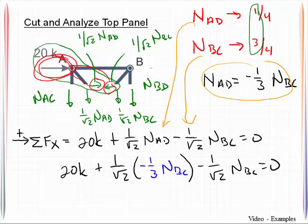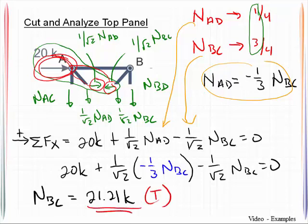And now that entire equation is written in terms of that force NBC and we can go ahead and solve for that being 21.21 kips. It is a positive value which then means that bar force is in tension.